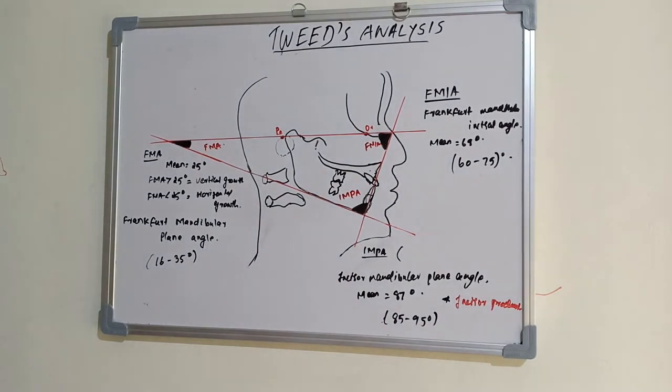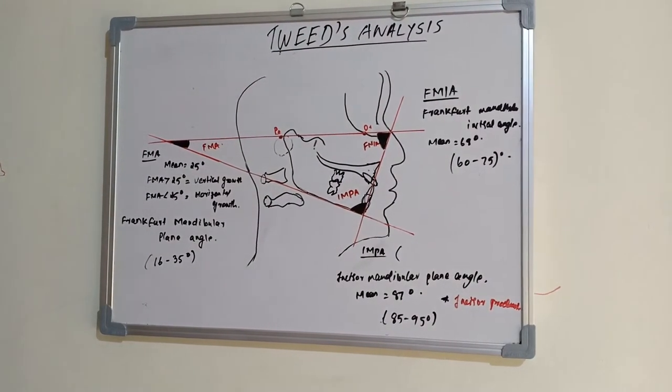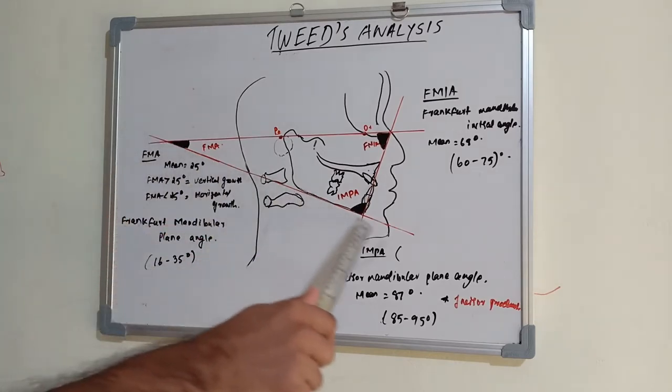How much mandibular incisors are inclined to the bone and the vertical relation of mandible with the cranium. So in this analysis, we have made a triangle by joining three lines. One is the mandibular plane line.